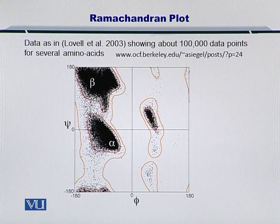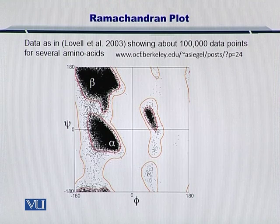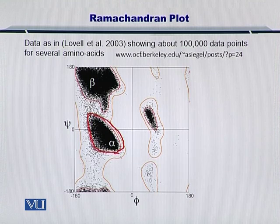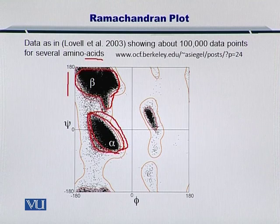In a very interesting study published by Lowell et al. in 2003, as shown in this slide, they looked at the Psi and Phi angles for about 100,000 different data points across several amino acids in various proteins. They found that alpha helices only contain a specific range of Psi and Phi angles, while beta sheets only contain Psi and Phi within a different range. Surveying many proteins, the angles from secondary structures are always limited to fall within these selected ranges.